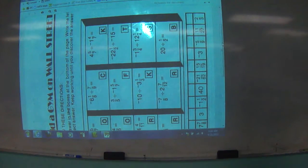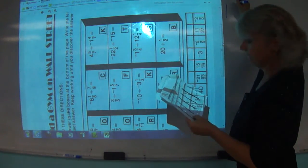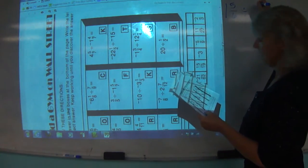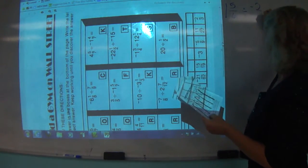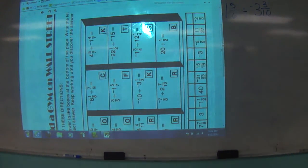What looks to be one of the harder ones? Say letter E on the bottom? Letter E on the bottom maybe? Which is 1 and 5 sixths divided by negative 3 and 3 tenths. Everybody see where that one is?